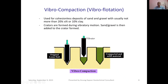Vibro-compaction or vibro-flotation is used for cohesionless deposits. Craters are formed in the original loose soil during vibratory motion. After that, sand and gravel are added to the crater formed in layers with simultaneous vibrations. The crater is fully filled with compacted and refilled material, which may be sand or gravel. This effectively reduces the earthquake-induced liquefaction susceptibility of the site and has been found to be very effective.